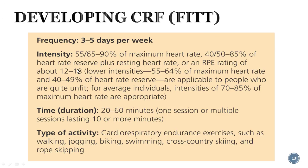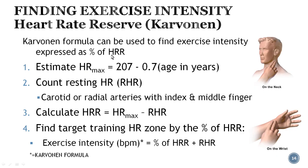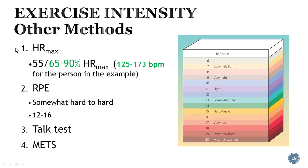There is another method using maximum heart rate directly — 55/65 to 90% of heart rate max. For that same person with a max heart rate of 192: 65% gives 125, and 90% gives 173 beats per minute. That is the prescribed target heart rate zone using this method. The 55% lower bound is reserved for people with chronic health conditions who are just beginning to work out.